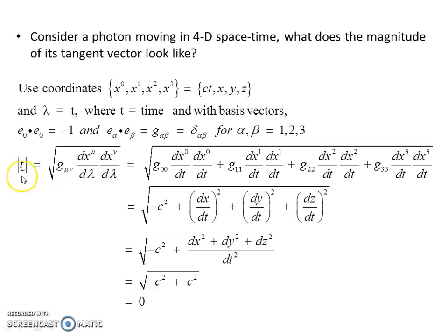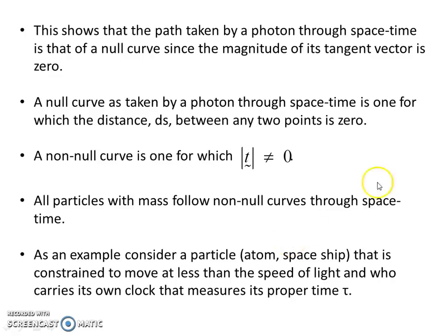So the modulus of the tangent vector, the magnitude of the tangent vector is 0. So photons travel null curves. The photon through spacetime follows a null curve, since the magnitude of the tangent vector is 0. A null curve, as taken by a photon, is one for which the distance ds between any two points on the curve is 0.